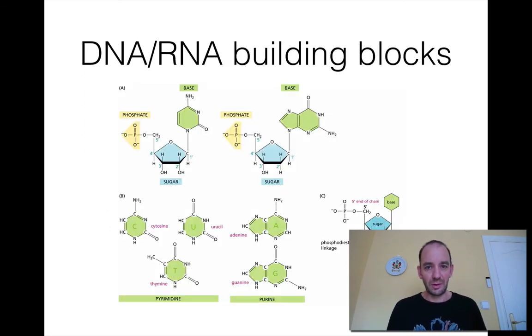DNA and RNA building blocks from a biochemistry point of view consist of only four types of building blocks or nucleotides. That's the famous nucleotides from Watson and Crick: A, C, T, G, or in RNA, A, C, U, G.